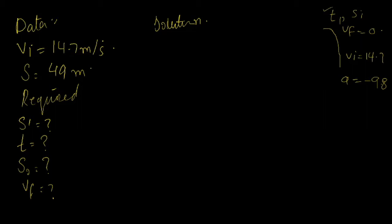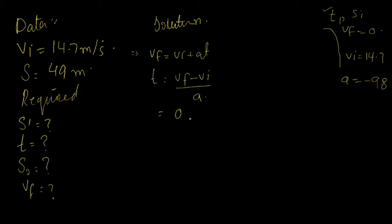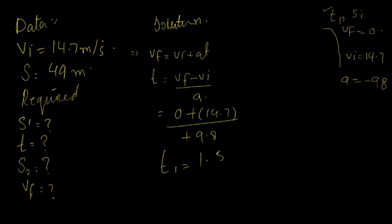Let's find time using the first equation of motion: VF equals VI plus AT, so T equals VF minus VI upon A. Substituting values: VF is 0, VI is 14.7, and acceleration is minus 9.8. The negatives cancel, and when we divide 14.7 by 9.8, we get T1 equal to 1.5 seconds.